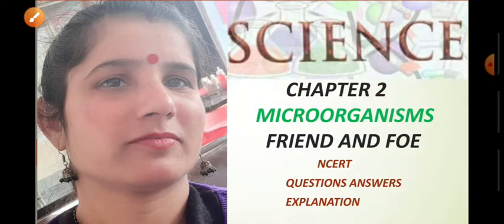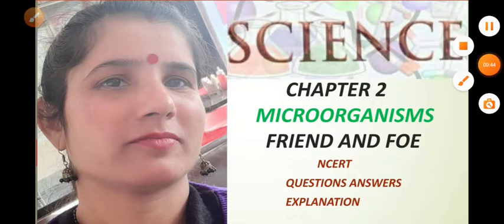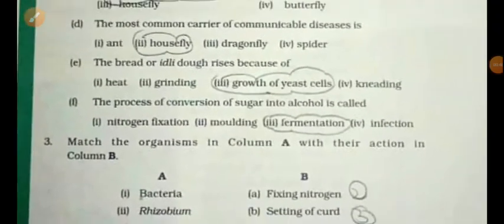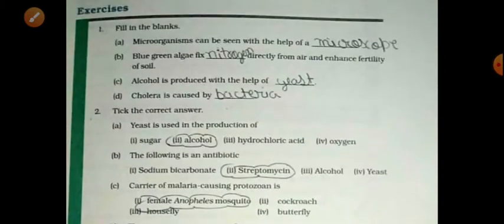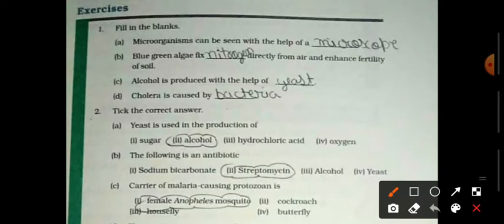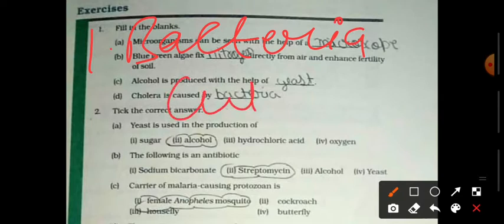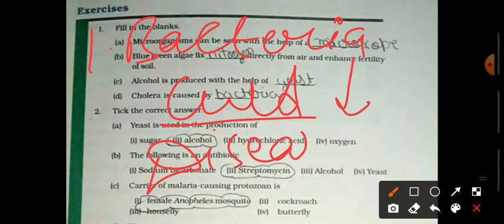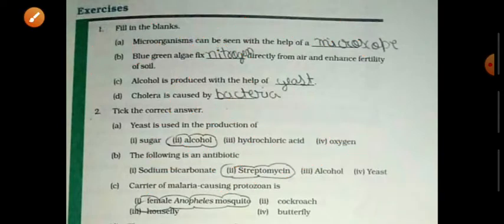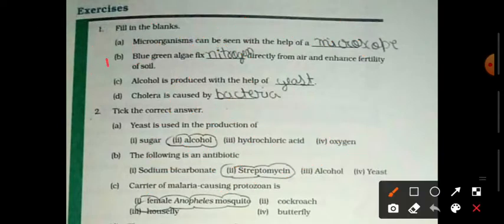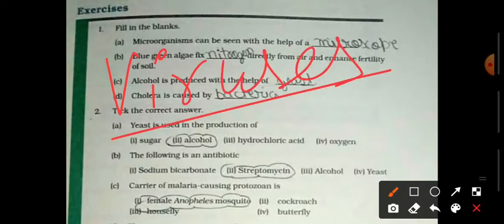Some microorganisms are harmful. If we can see some category of virus, which means some microorganisms are harmful, some microorganisms are useful. For example, bacteria is useful like curd formation, but same bacteria when in our body causes disease, then it will be harmful. Likewise viruses are useful and harmful.